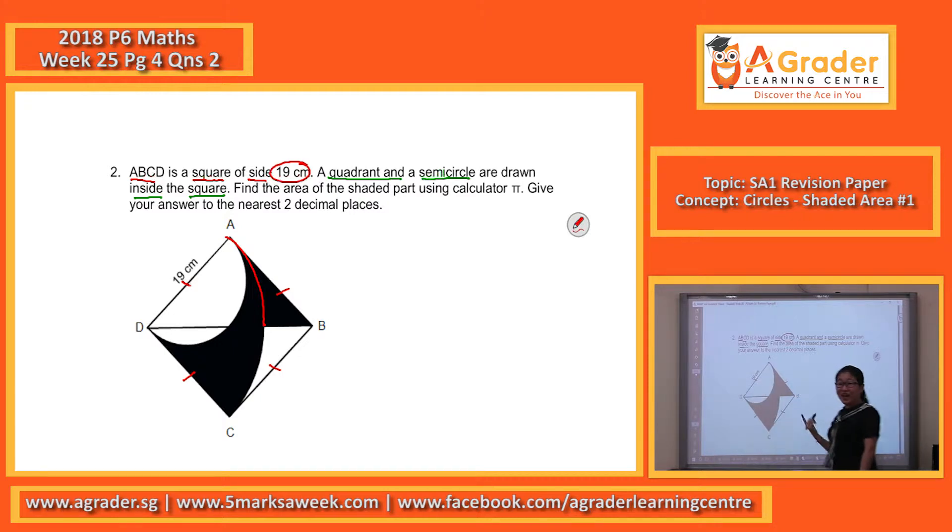Oh yeah. That's a nice reaction. So this 19, besides the side of the square, is actually the diameter of the semi-circle and also the radius of the quadrant. Please take note.